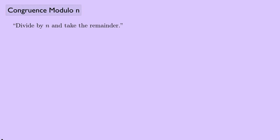Let's review modular arithmetic. We're going to be talking about modular arithmetic working with integers, and the basic idea is you divide by n and you take the remainder. Let's do an example where n equals 3. Suppose we were looking at 14 and we wanted to look at that mod 3 — that's how we write modular arithmetic.